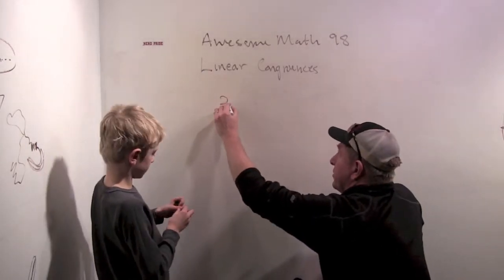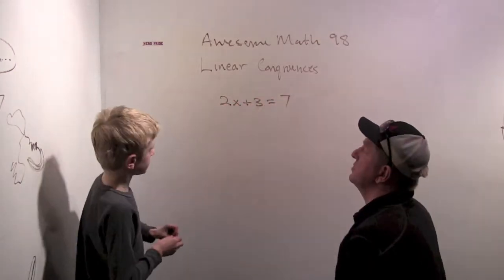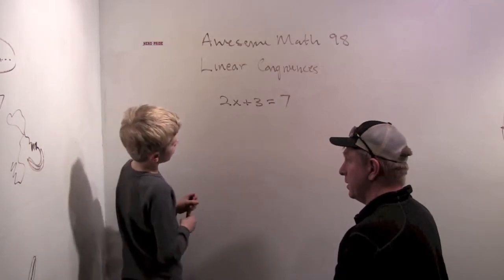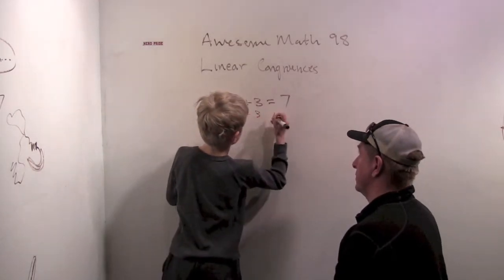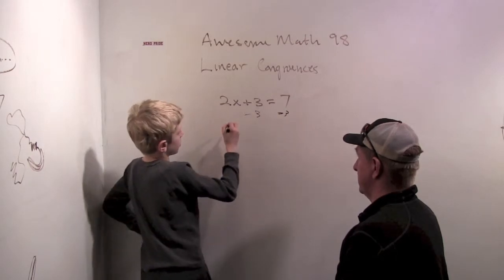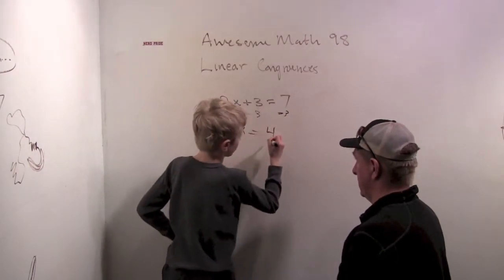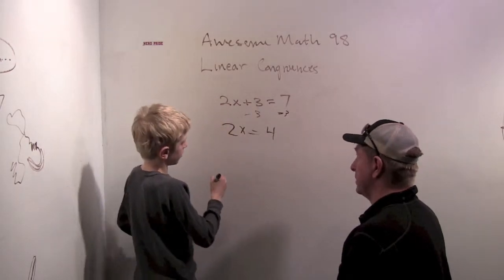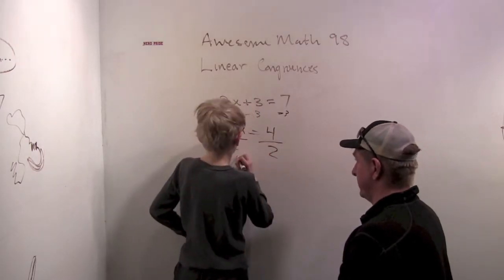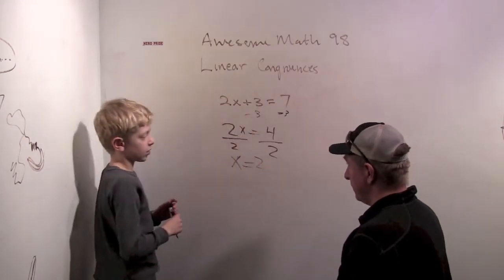Like 2x plus 3 equals 7. What would you do to solve this equation? Well, you can subtract 3 from both sides, so you get 2x is 4. Then you can divide everything by 2, then you get x is 2.